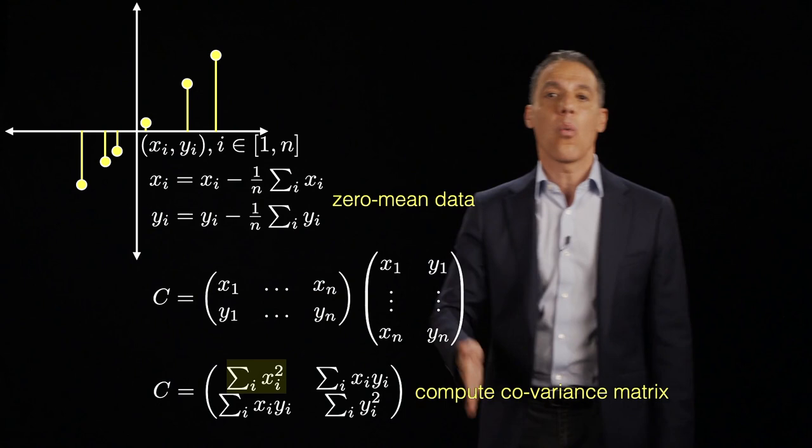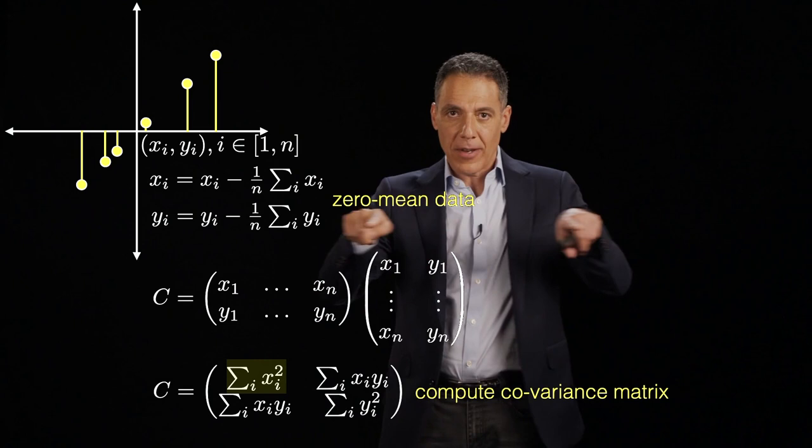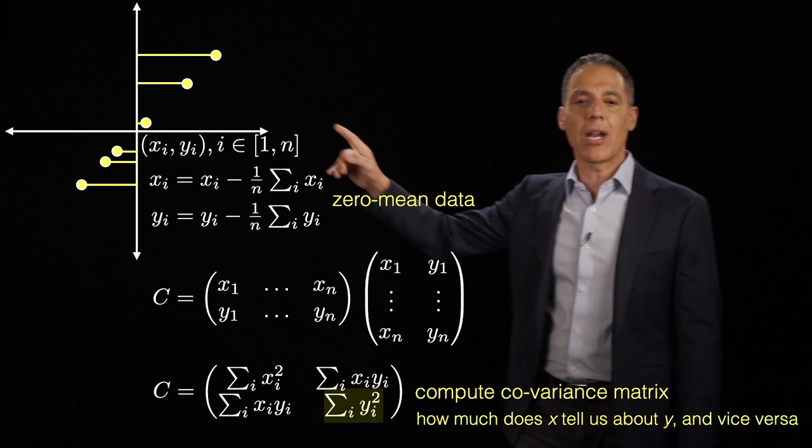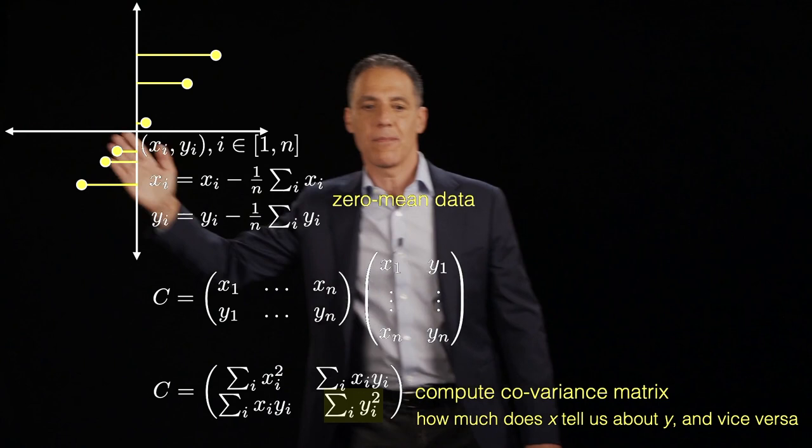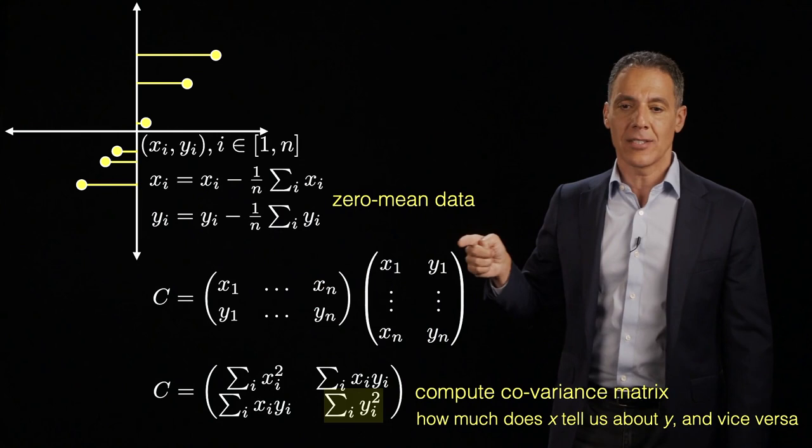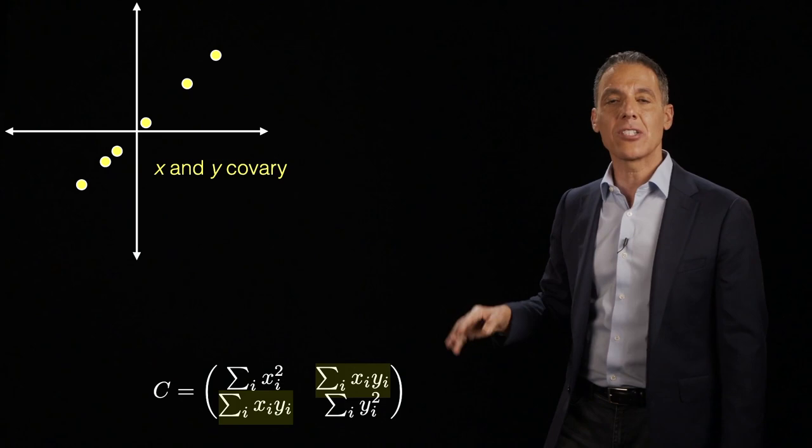Now, what's this bottom one here? Well, that's the second row times the second column here. So that's the sum of all the Y's. That is the variance in the Y direction. So think taking all the data, projecting it downward. That gives me the variance in this dimension. Take all the data, project it into the vertical axis. That's the variance in this direction. So this tells us something about how much the data varies in this dimension and in this dimension.